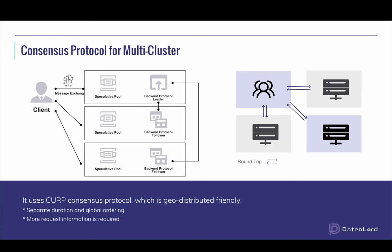CURP is a geo-distributed friendly protocol. Let's discuss it in a top-down way. The main idea behind the protocol is separating data durability from global ordering. In RAFT, a committed request has two properties: first, it will not get lost if the majority of the cluster servers are alive; second, the ordering of the request will not get lost or revised if the majority of the cluster servers are alive. Do we need to keep them at the same time? The answer is no. Sometimes the ordering property is not that important.